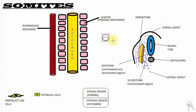In the head region, these somitomeres won't form somites. They will be associated with the neural nerves and will form the different muscles and different regions of the head — but that's not important for us. From the region of the occiput downwards, these somitomeres will form the somites. If you consider the general arrangement of cells in the somitomere, we have fibroblast-like cells, also known as mesodermal cells.